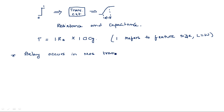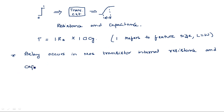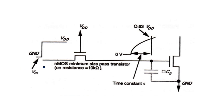Delay occurs in MOS transistors — and not only in MOS, but everywhere — because of the internal resistance and capacitance. Now let us consider a practical circuit where the input is applied and output is taken. Here we have taken two transistors: one transistor is acting as a pass transistor, and we are applying the input at the gate terminal of the first transistor.